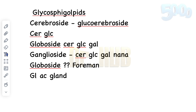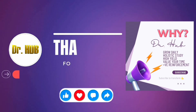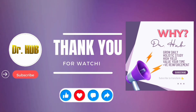To clarify the abbreviations: Cer stands for ceramide, Gal is galactose, Glc is glucose, GlcNAc is N-acetylgalactosamine, and NaNa is N-acetylneuraminic acid.